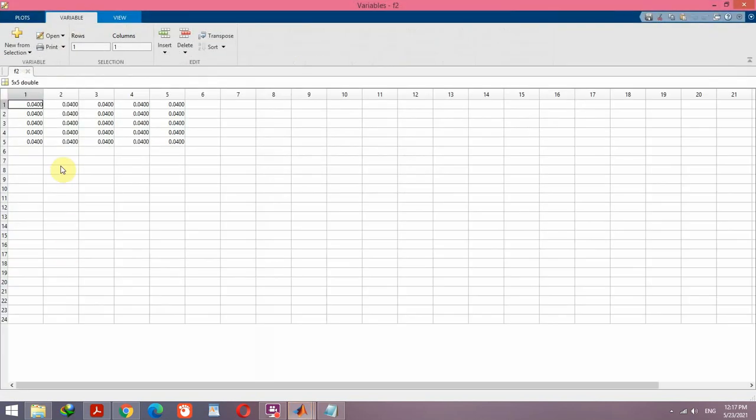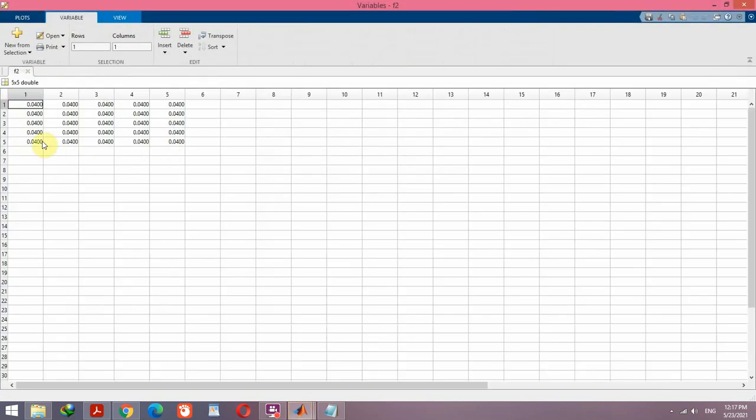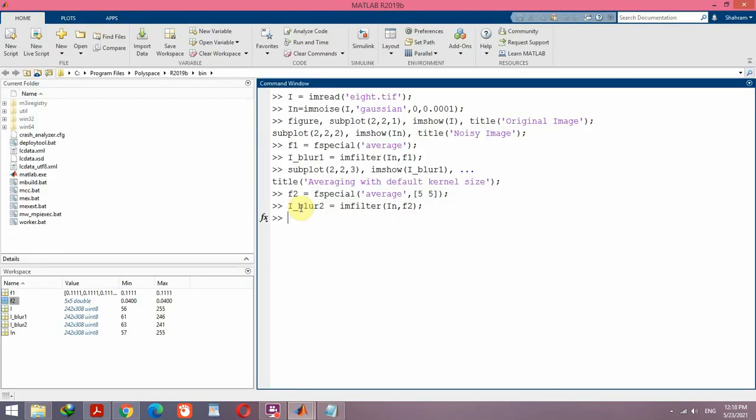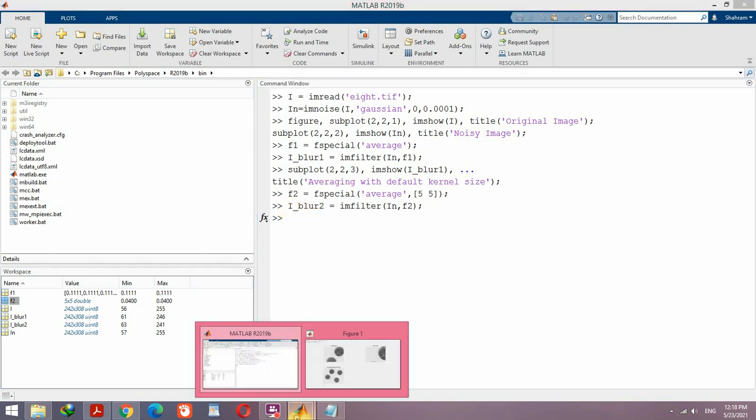And if you check it you can see that all of the elements are the same and they are equal to 0.04 which is 1 over 25. Apply this filter by using imfilter function and store the result in another variable. Now display it.